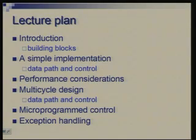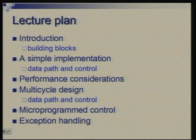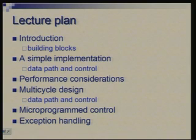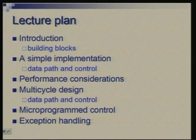First we will talk about the building blocks — what are the other blocks including ALU which are required to build a processor — and we will start with a very simple design where we will simply put these building blocks together in the simplest possible manner and see how the data would flow, what is the data path and how it is controlled. Then we will see the performance of this particular design and realize that we need to do something more to get better performance. We will therefore move over to a more sophisticated design, which is called a multi-cycle design. This term multi-cycle will be explained as I go along, and again we will see the two major parts: data path and control.